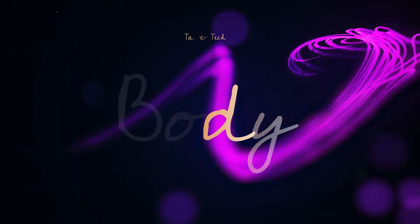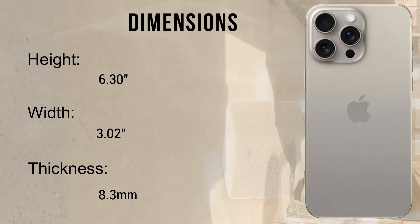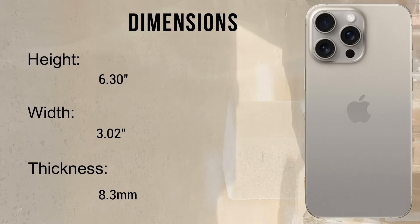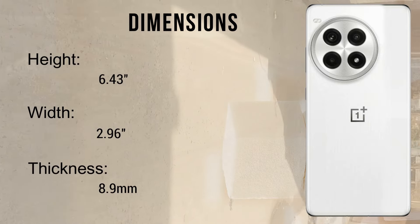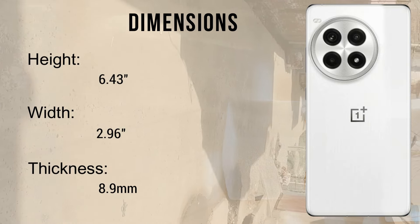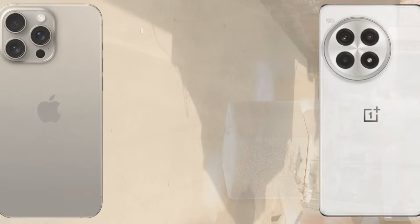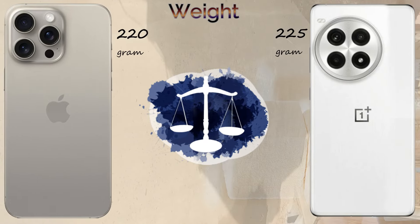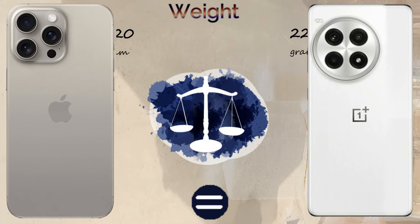The dimensions of the iPhone 15 Pro Max: height 6.3 inch, width 3.02 inch, thickness 8.3mm. The OnePlus A3 Pro: height 6.43 inch, width 2.96 inch, thickness 8.9mm. The iPhone 15 Pro Max weight is 220g and the OnePlus A3 Pro weight is 225g.